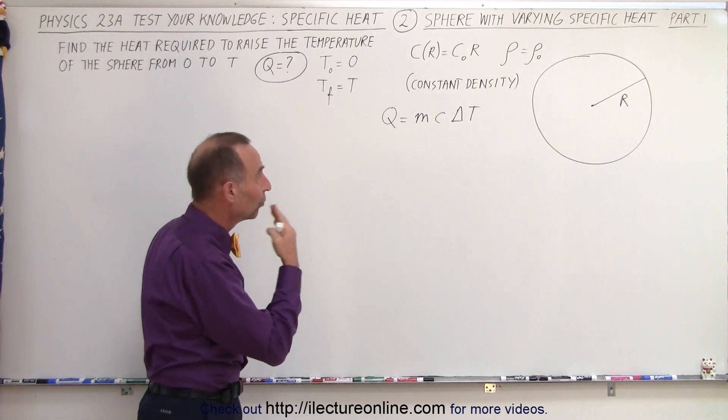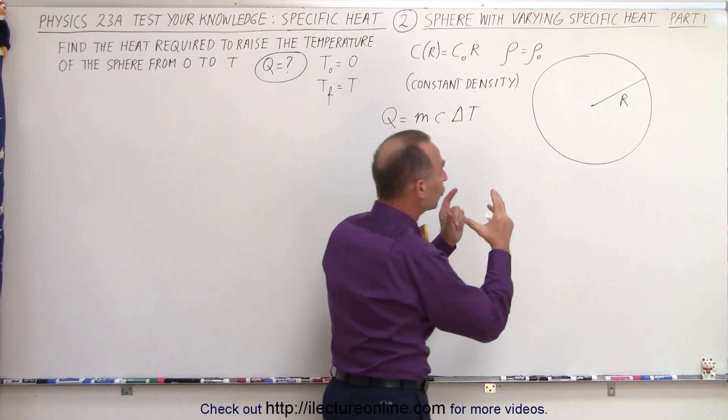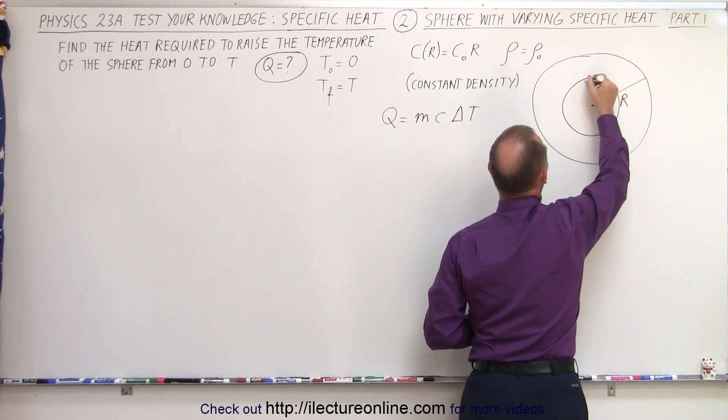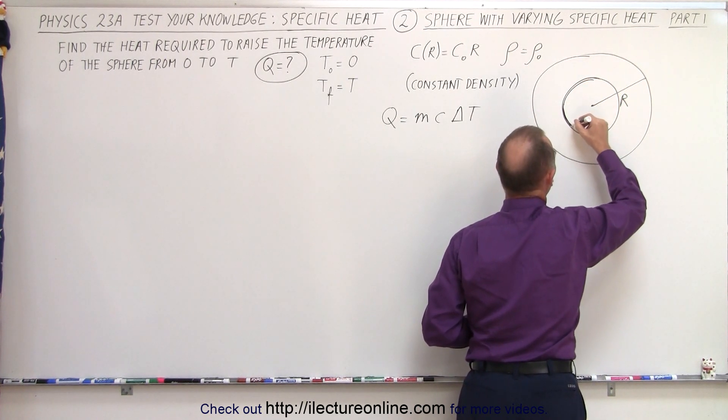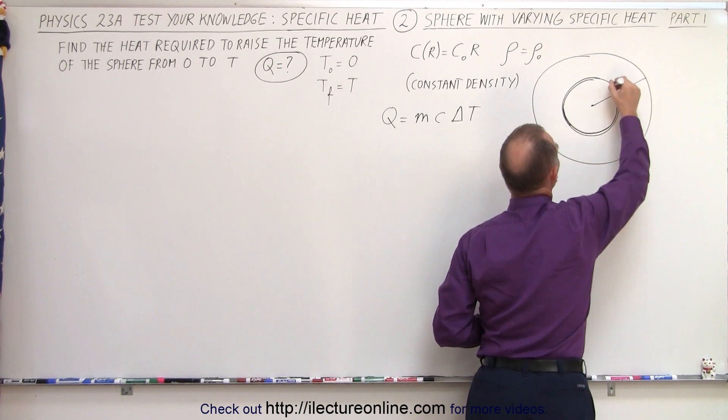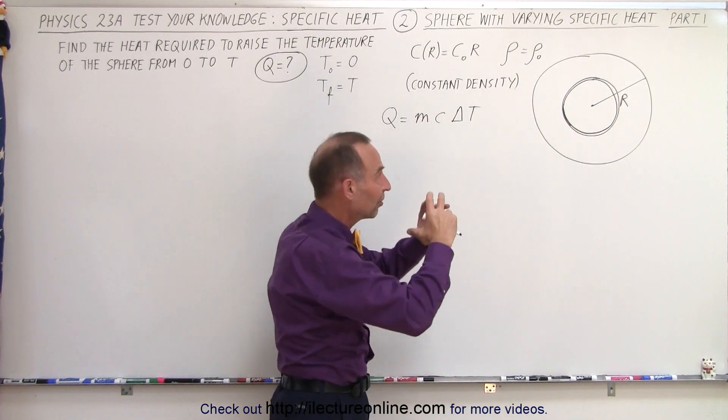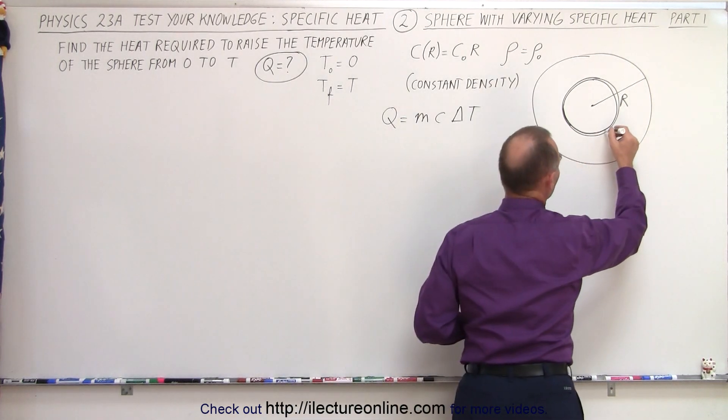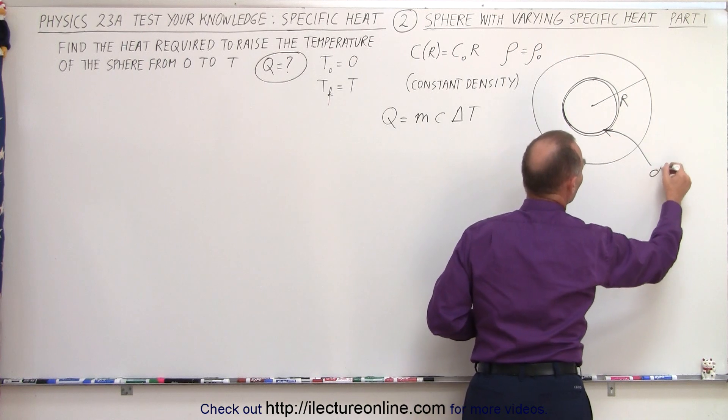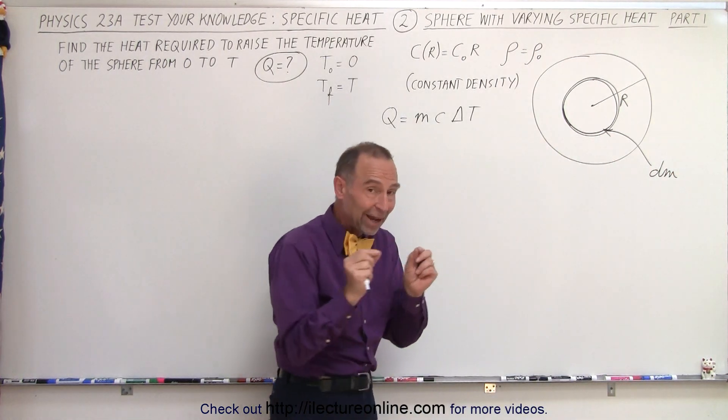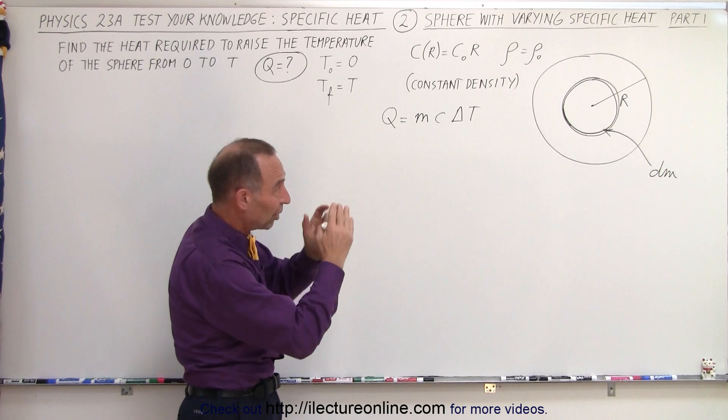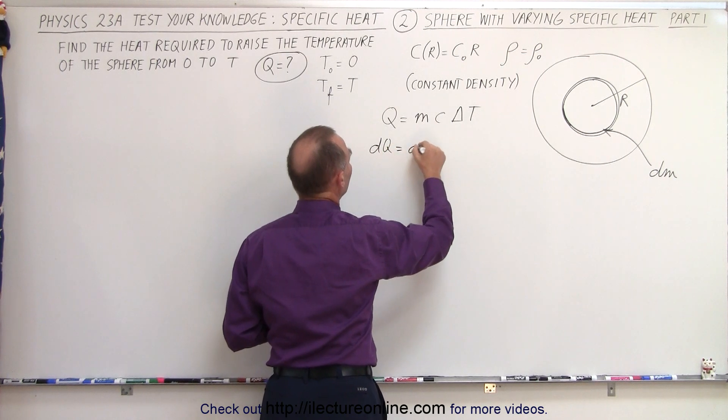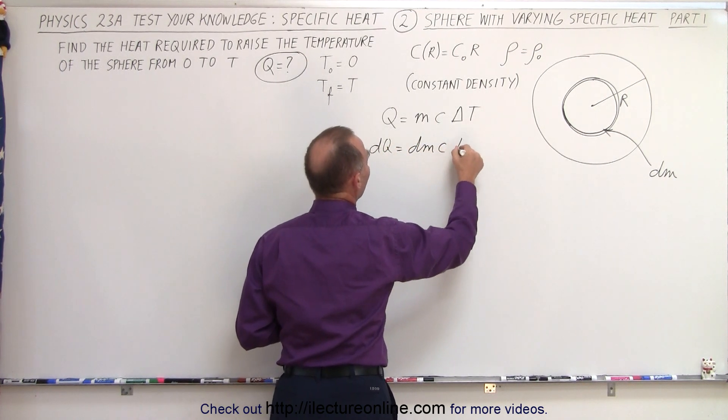So that means that we now need to find the Q for small spherical regions, or shell regions, not spherical regions, but for small little shells. So if you can imagine we have spherical shells that start from the origin and build all the way out like this, we have a spherical shell that we can call a small dm. And so we need to find the heat required for each little shell and then add them all up.